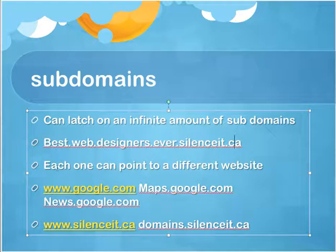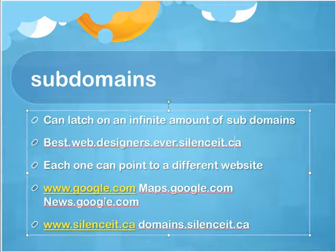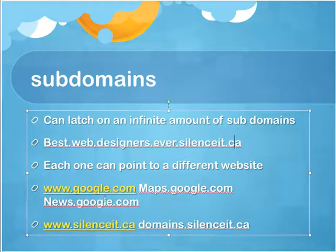The nice thing is that I can point any one of these sub-domains to a different website. So maps.google.com goes to the Maps website, news.google.com goes to the News site, and www.google.com goes to their search. I can do the same — I've done one for our website and one for where we sell domain names.